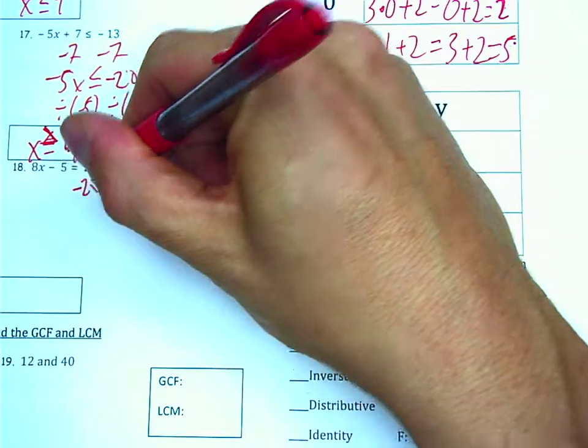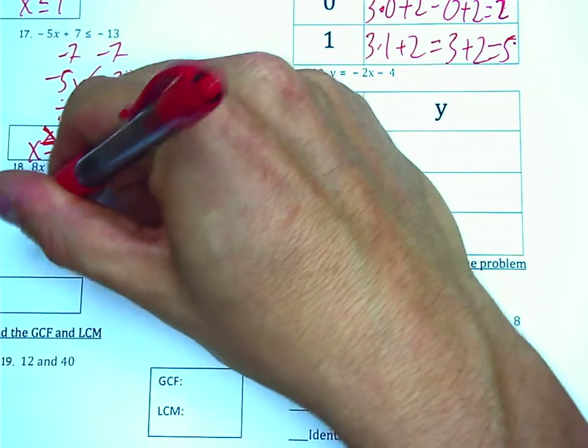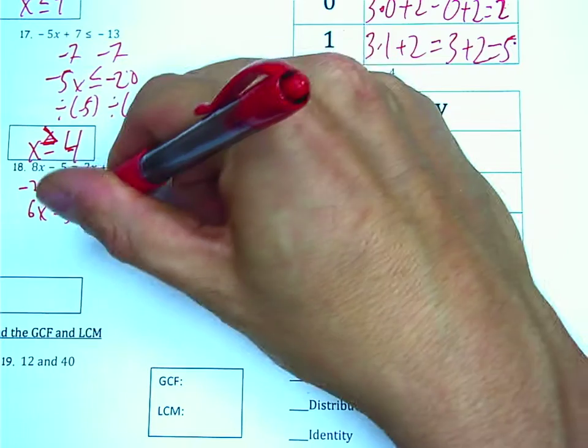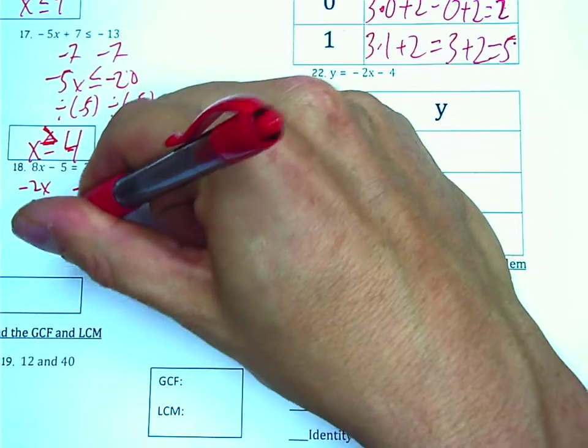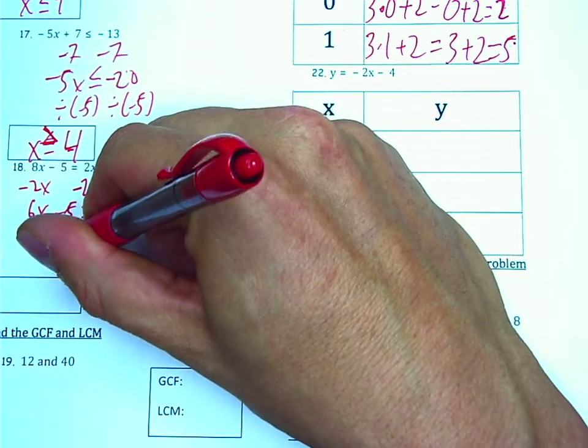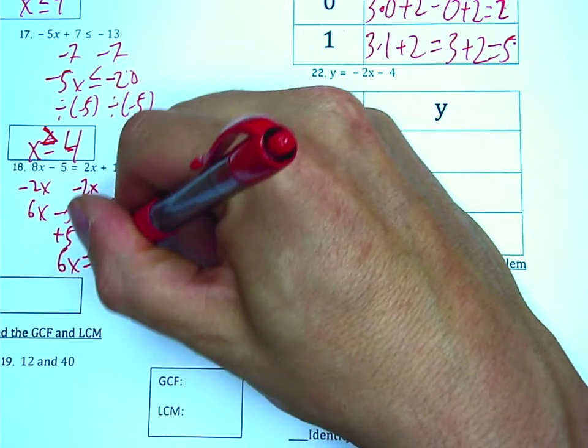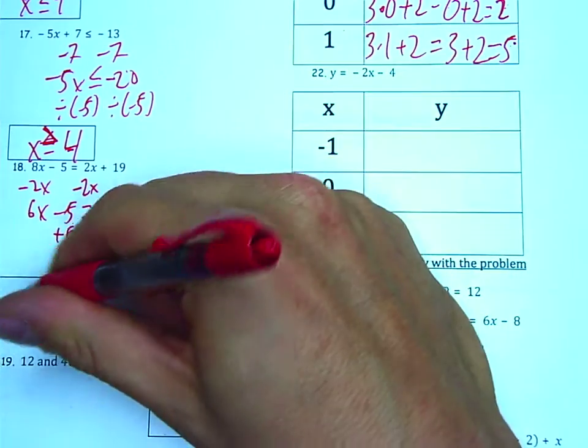Question 18, subtracting 2x from 8x will yield 6x. Adding 5 to 19 will yield 24. Dividing 6 into 24 will yield 4.